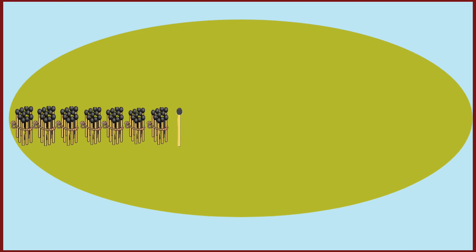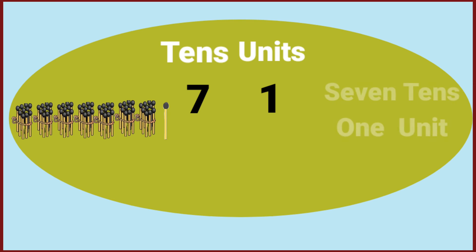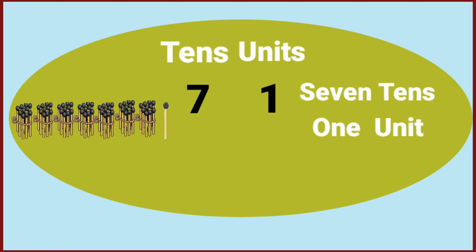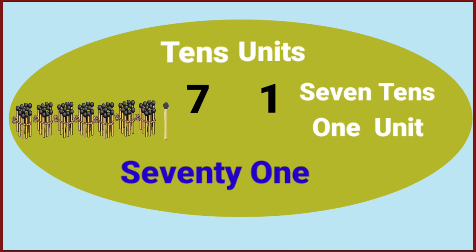Seven bundles and one single matchstick makes seven tenths and one unit. Seven tenths and one unit means seventy-one.